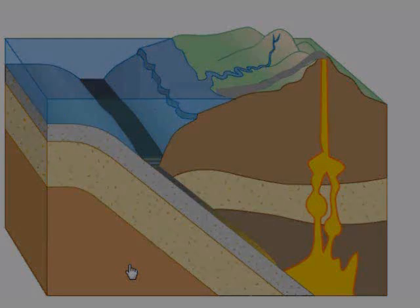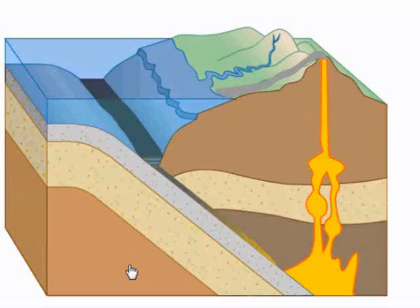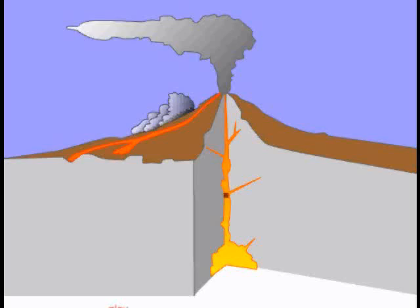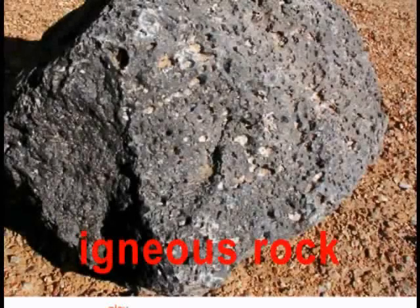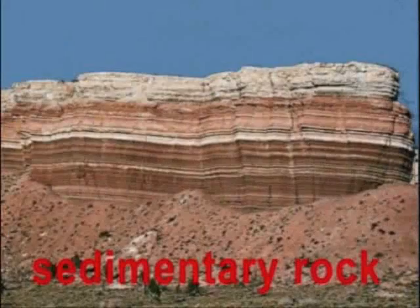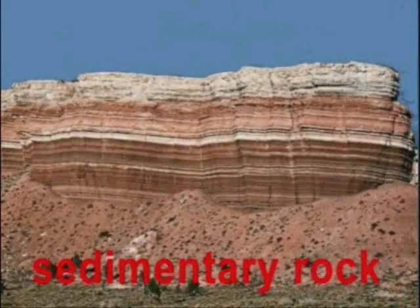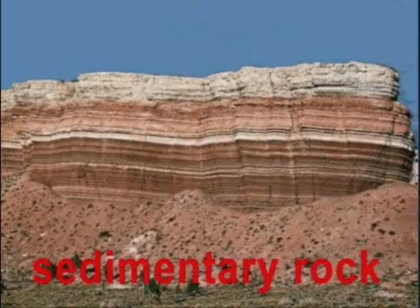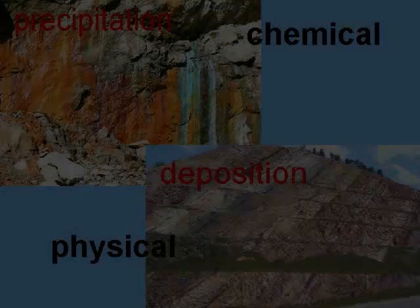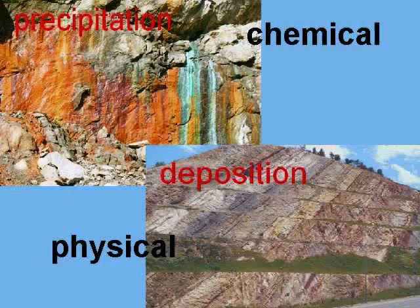Then, because some of this metamorphic rock is pushed further down, it gets so hot it melts, forming new magma, and the rock cycle starts over. Igneous rock is mostly crystallized or cooled parts of magma. Sedimentary rock is weathered and eroded igneous rock deposits that have formed layers, been buried, put under heat and pressure, and lithified — physically, chemically, or both.